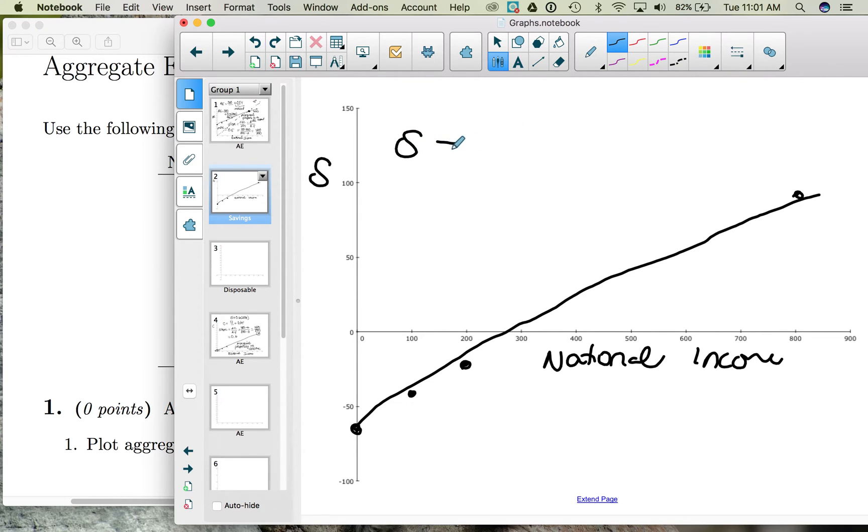And we can turn that into a formula for savings. Just like the consumption function, the savings function is autonomous plus induced. So the autonomous portion is the amount of savings or dis-savings you do when you have zero income. So when we have no income, we're pulling $65 out of savings.